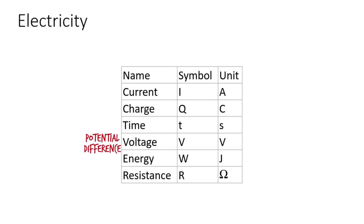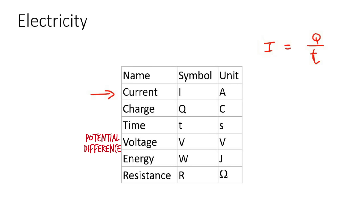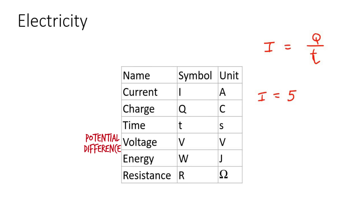So the first thing I want to look at is something called current. The symbol for current is I and the unit is amps. So for example, we're going to start looking at formulas a little bit later, and some of those formulas are going to have an I in them — for example, I is equal to Q over T. So when you see the I, you must understand that that means current. When you calculate the current and give the teacher the answer, you're going to say five amps — that's what the unit is. So don't confuse unit and symbol.